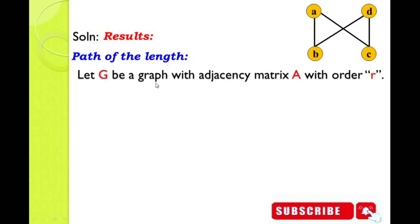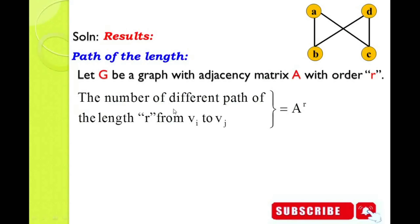Let G be a simple graph with adjacency matrix A of order R. Then the number of different paths of length R from one vertex to another vertex V_i to V_j is always equal to A power R, where A is the adjacency matrix. So to find the number of different paths of length R, we must know the adjacency matrix from the given graph.